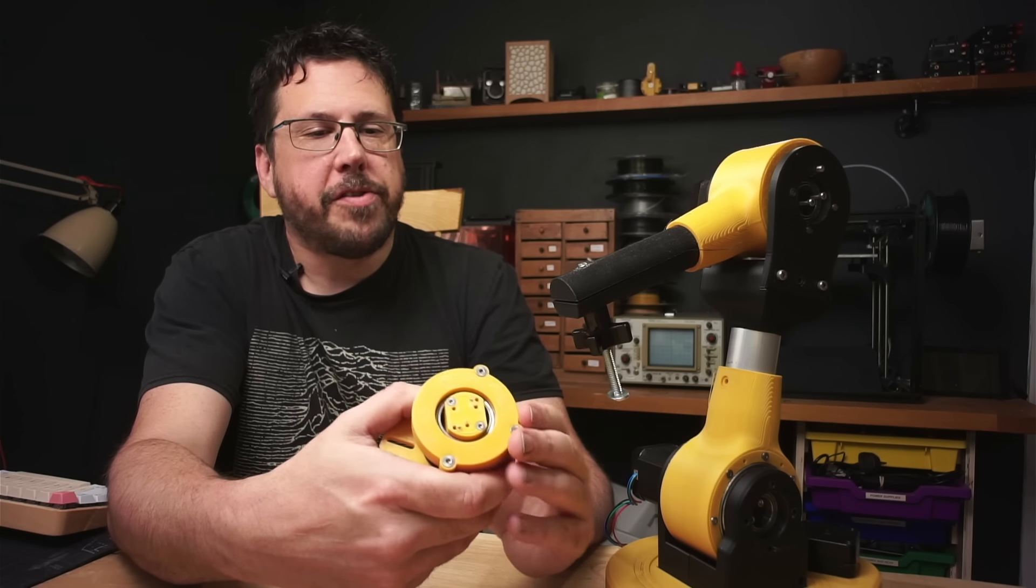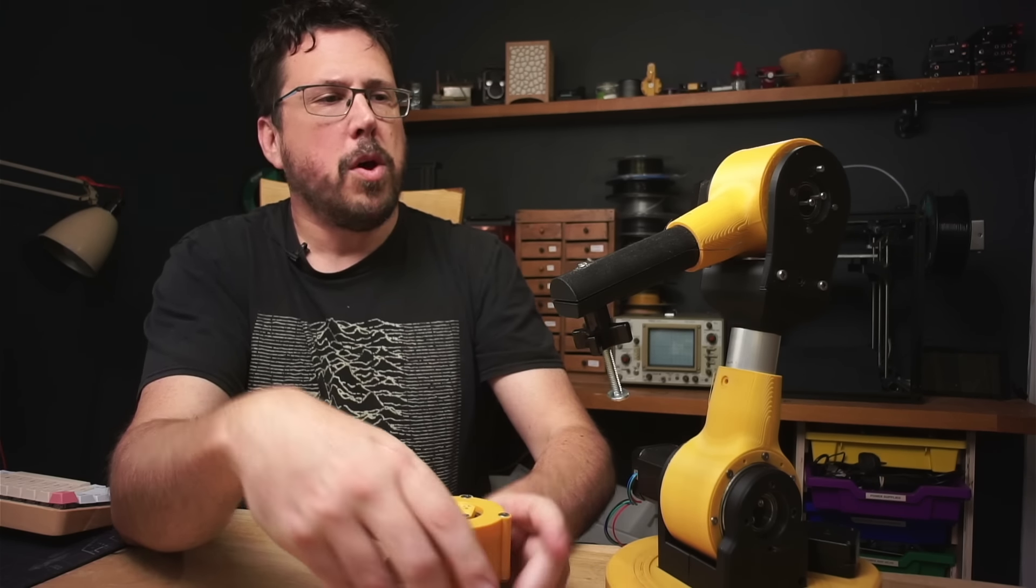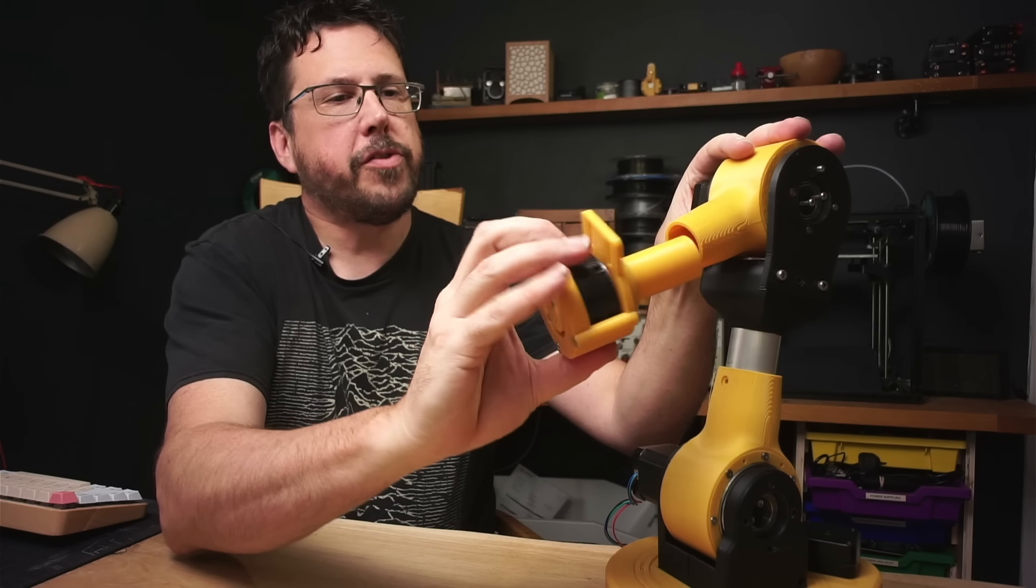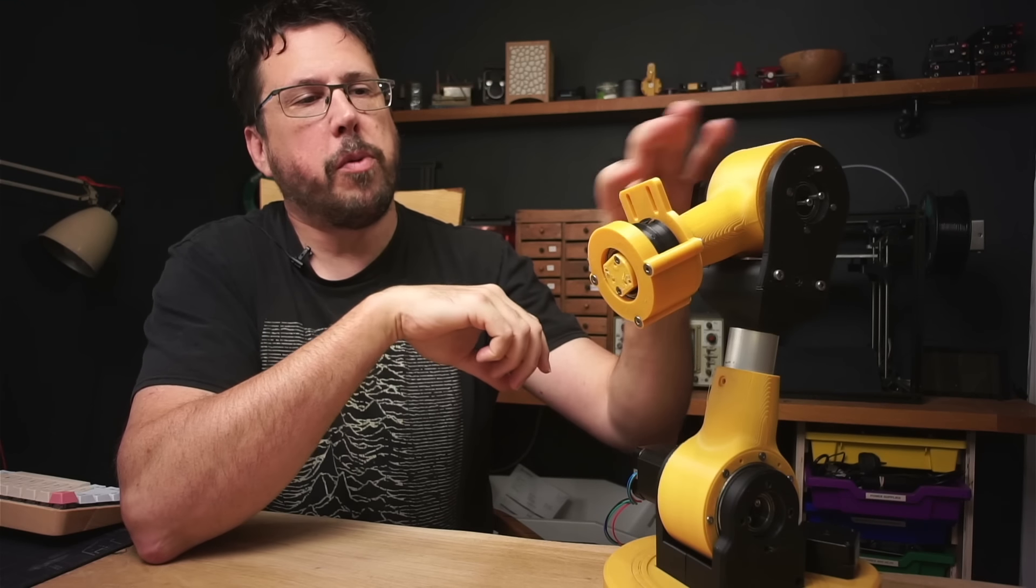So with our first wrist axis complete, we can now mount it onto the arm. We'll just take the old piece out of here and this should slide straight into place. We can attach it more securely with a screw later.